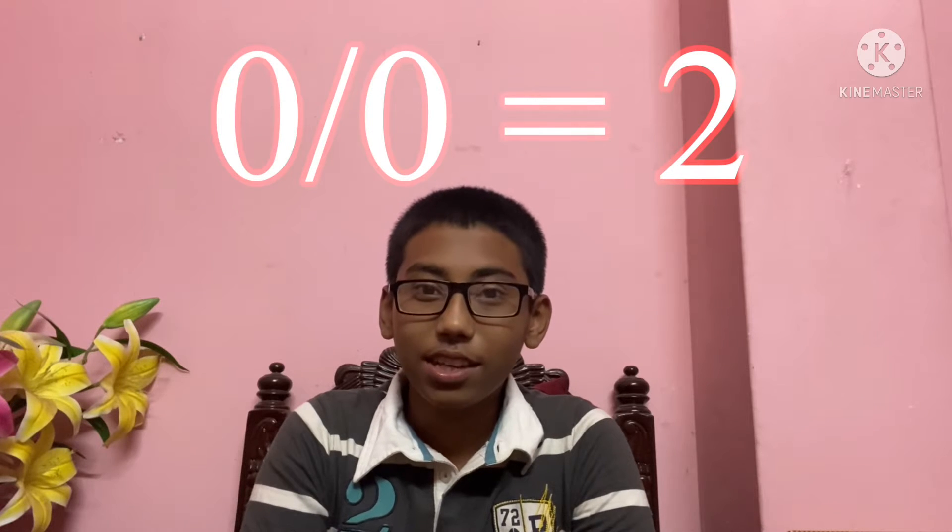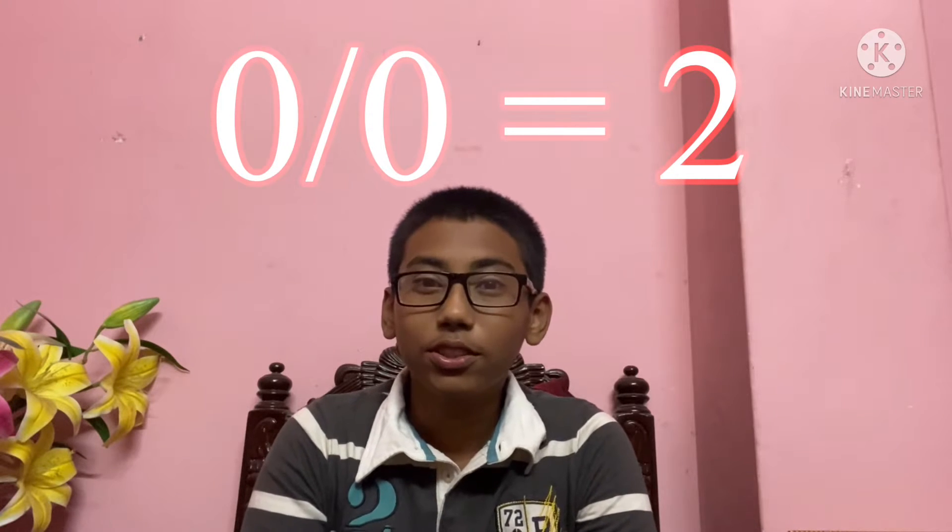Hey guys, assalamualaikum, it's me Fihad Abraar Shabcho and welcome to my another video. So guys, today's video is going to be interesting, so please like and share. Today we're going to look at a funny math equation: 0 divided by 0 equals 2. How is that possible? That's possible by breaking the fundamental rules of mathematics. So that's a funny question, don't take it seriously.